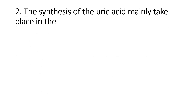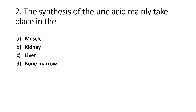The synthesis of uric acid mainly takes place in the: Option A - Muscle, Option B - Kidney, Option C - Liver, Option D - Bone Marrow. The right answer is Option C, Liver. Purine base metabolism end product is Uric acid.